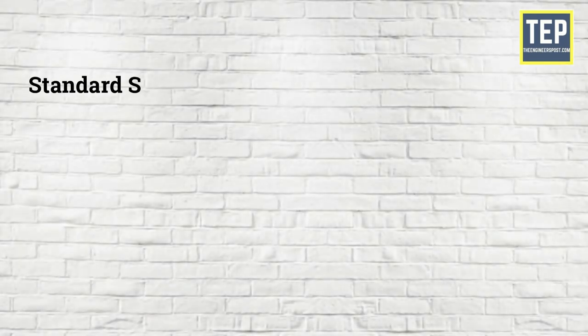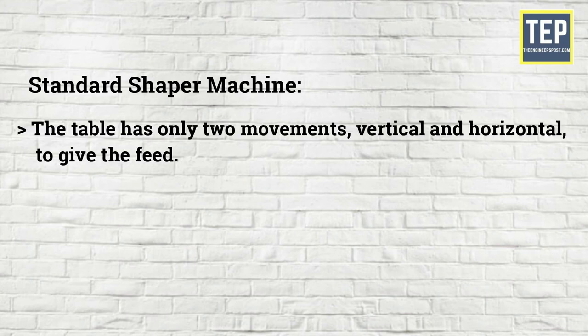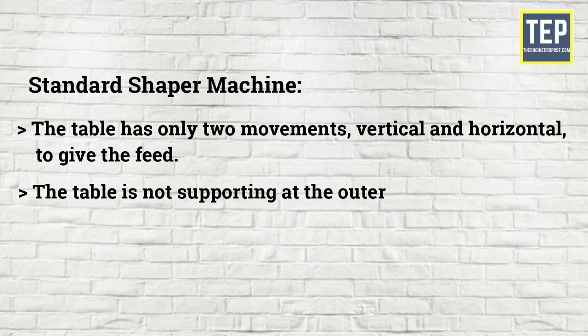Standard Shaper Machine: In this types of Shaper Machines the table has only two movements, vertical and horizontal, to give the feed. That's why it is known as Standard Shaper Machine. Here the table is not supporting at the outer end.